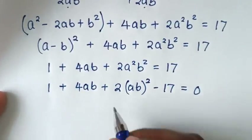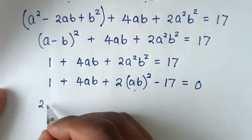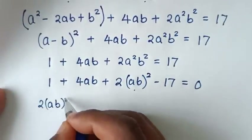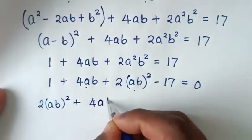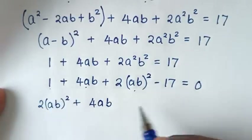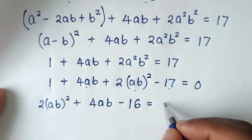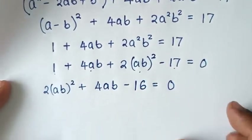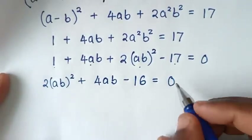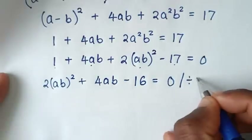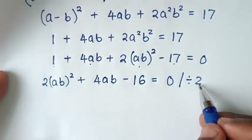Now from here, starting with the squared term: 2(ab)² + 4ab, then 1 - 17 = -16, equals 0. Now from this quadratic equation, it is divisible by 2, so we divide the whole equation by 2.